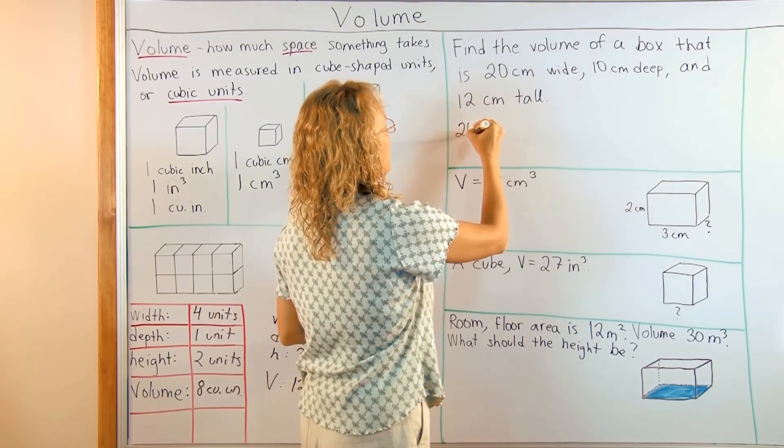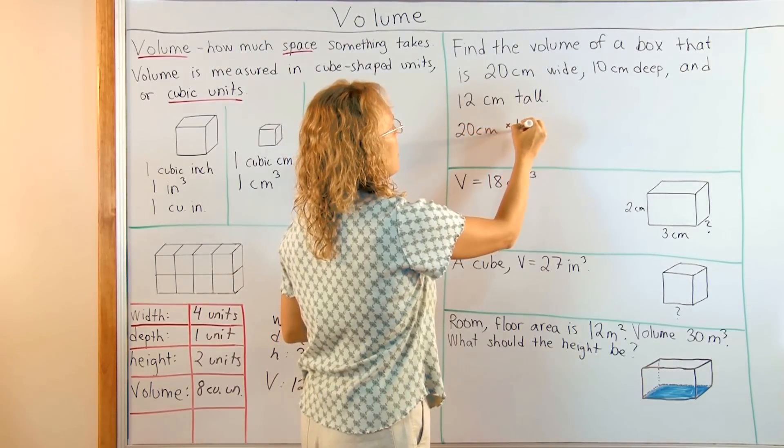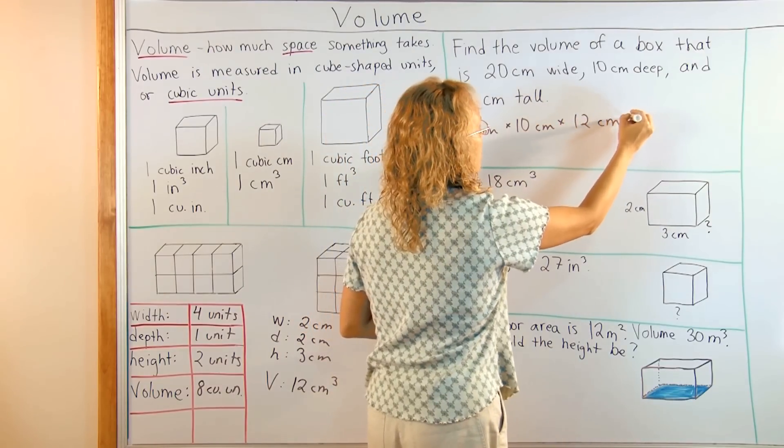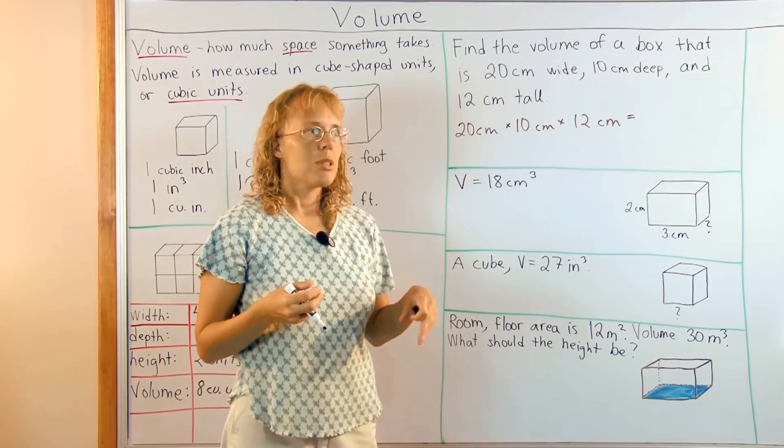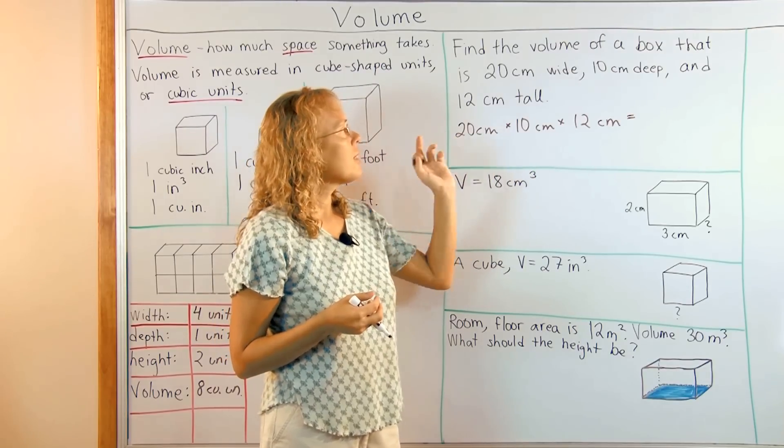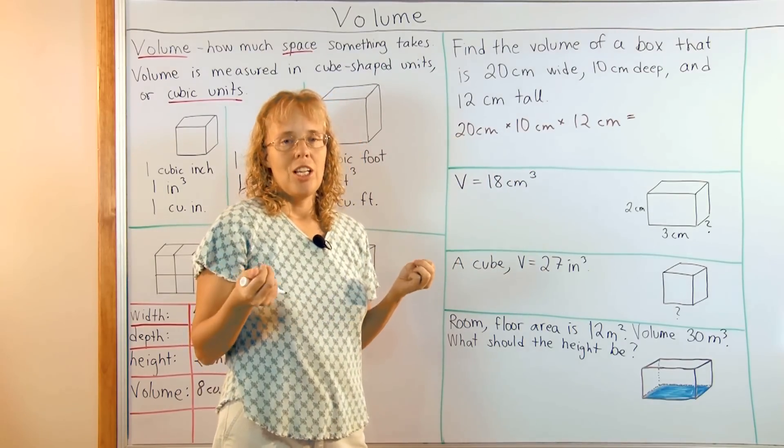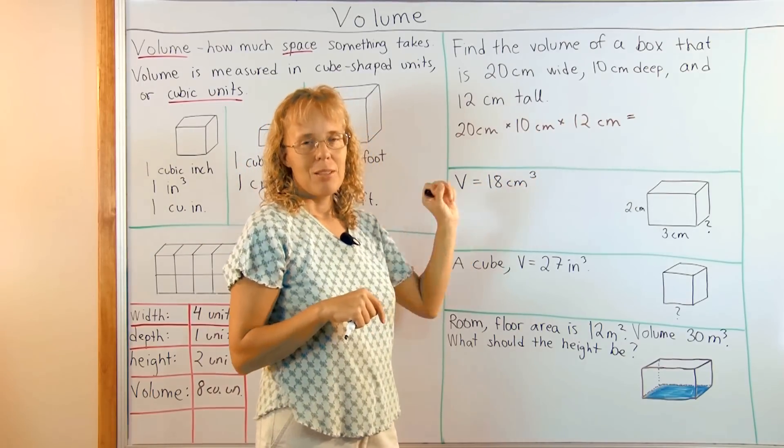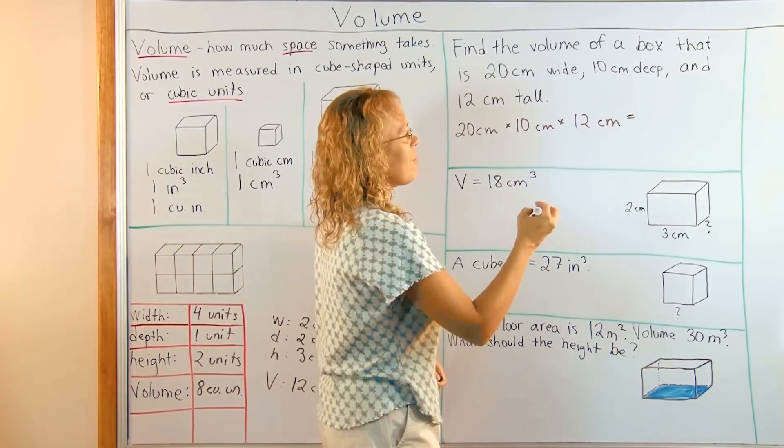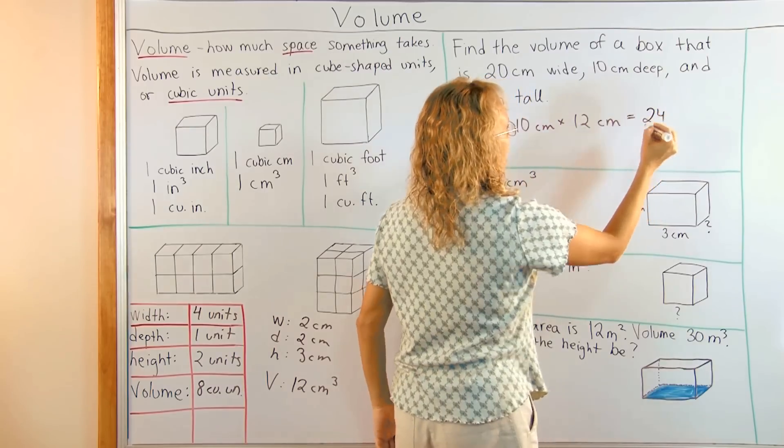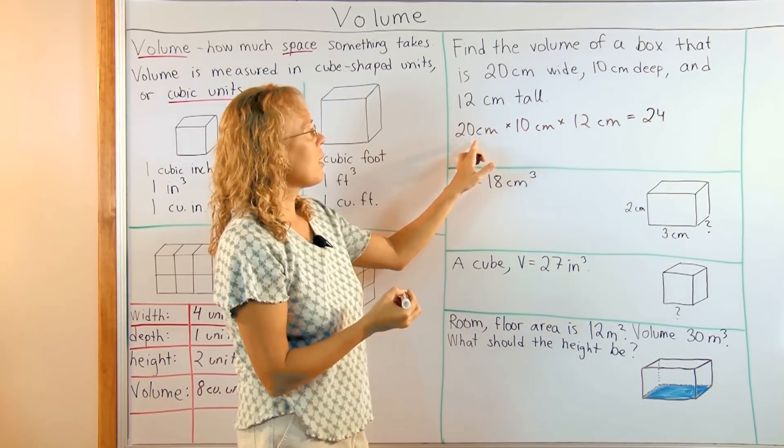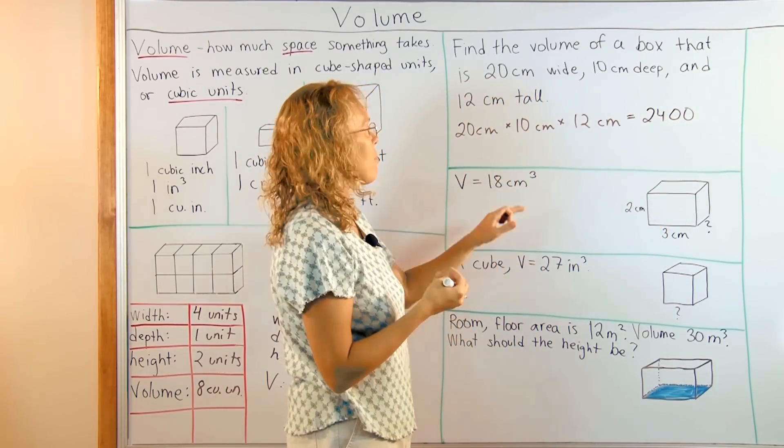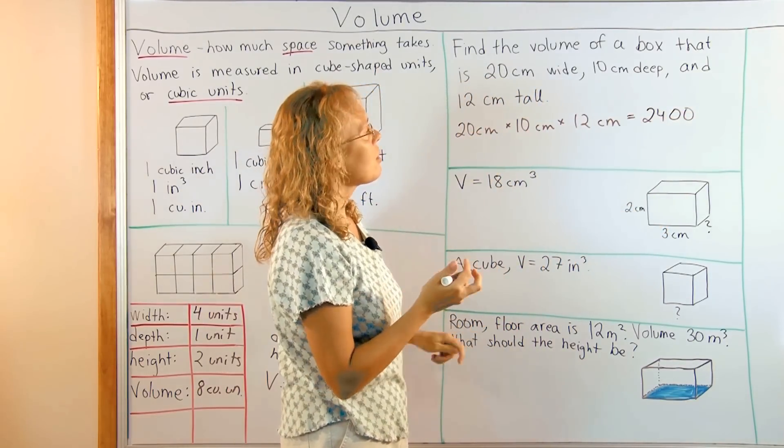So let's go twenty centimeters times ten centimeters times twelve centimeters. And to multiply these three numbers where there's zeros here involved, you can first ignore the zeros and multiply two times one times twelve. Which is just two times twelve, right? Twenty-four. Then you tag how many zeros you had here. One, two. Tag the zeros there. That's like a little shortcut for multiplying by ten or twenty or whatever.